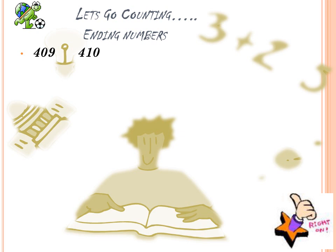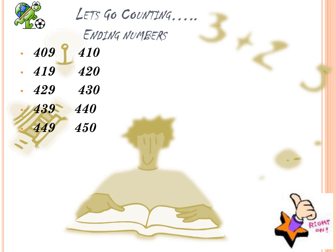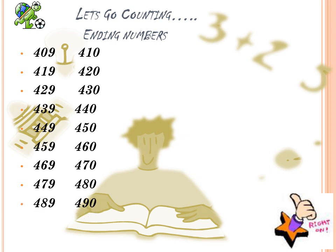409 is followed by 410, 419 is followed by 420. Then we have 429 being followed by 430. 439, 440. Can we count together from here? 449, 450, 459, 460, 469, 470, 479, 480, 489, 490, 499, 500.